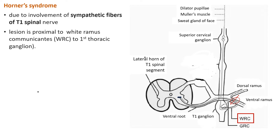Sometimes additional symptoms are seen in Klumpke's paralysis beyond the motor and sensory loss in the upper limb. These symptoms constitute Horner syndrome, which occurs due to involvement or injury to the sympathetic fibers passing via the T1 spinal nerve, with the lesion being proximal to the white ramus communicantes to the first thoracic ganglion.